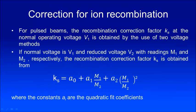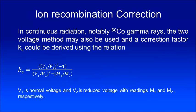For a continuous beam like Cobalt-60, you still use the two-voltage method, but the equation is different: K_s equals (V1/V2)² − 1 divided by (V1/V2)² − M1/M2. V1 is the normal voltage (e.g., +300 V), V2 is the reduced voltage (e.g., +100 V), and M1, M2 are the readings for V1 and V2 respectively.